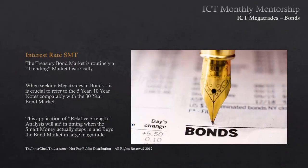The interest rate SMT is going to be that silver bullet you're looking for — qualifying and confirming that the mega trade itself is actually unfolding. The treasury bond market is routinely a trending market; historically over long periods of time bonds typically move in a trending environment. It doesn't mean they won't go into consolidations, it just means it's historically a good trending market. When seeking mega trades in bonds it's crucial to refer to the five-year and ten-year notes comparably with the 30-year bond market. This relative strength analysis aids in timing when smart money actually steps in and buys in large magnitude.